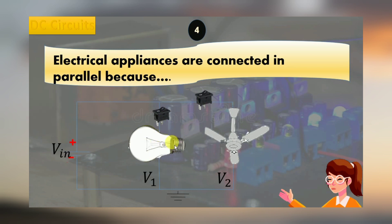Here you can see, even if the bulb is off, the fan is still working because the path is closed and it completes the circuit.